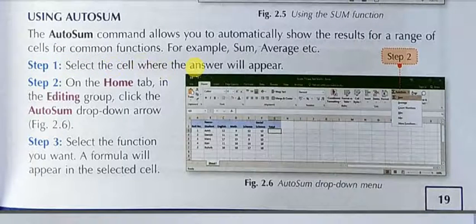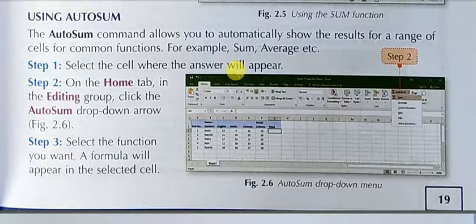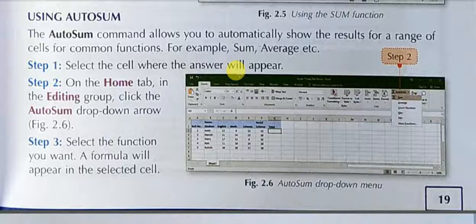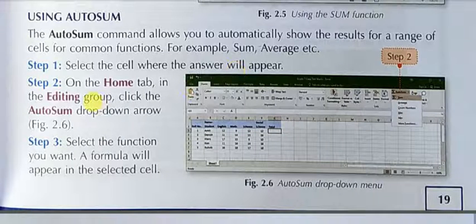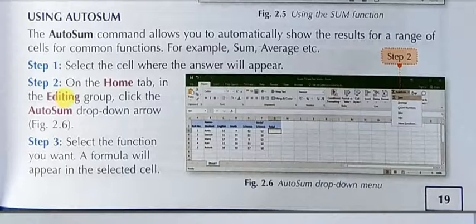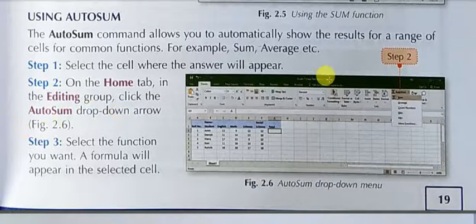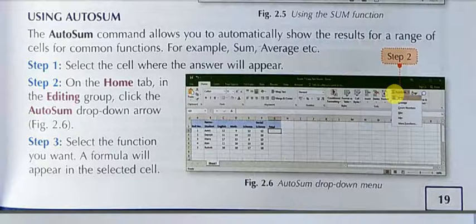Step 1: Select the cell where you want the answer. Step 2: On the Home tab, in the Editing group, click the AutoSum drop-down arrow. You will get the AutoSum option. You have to click here.